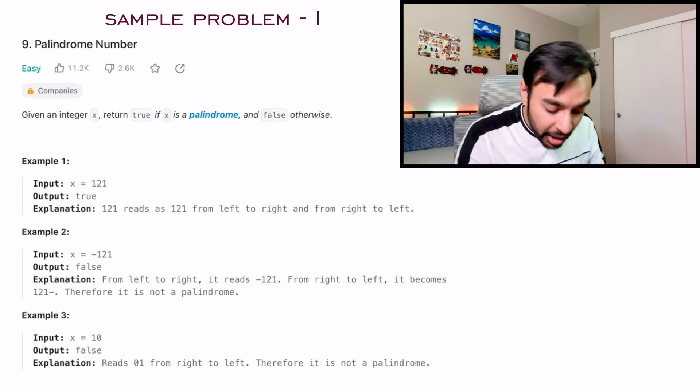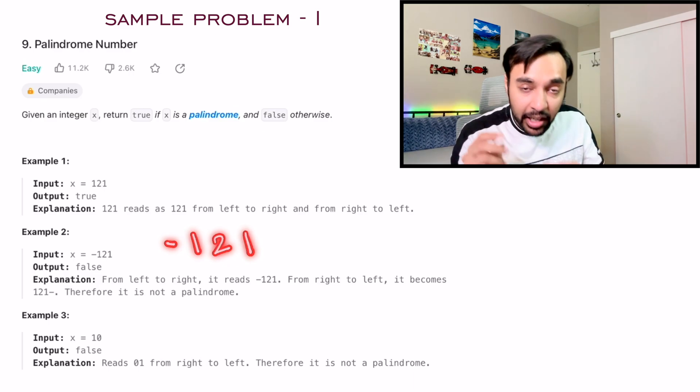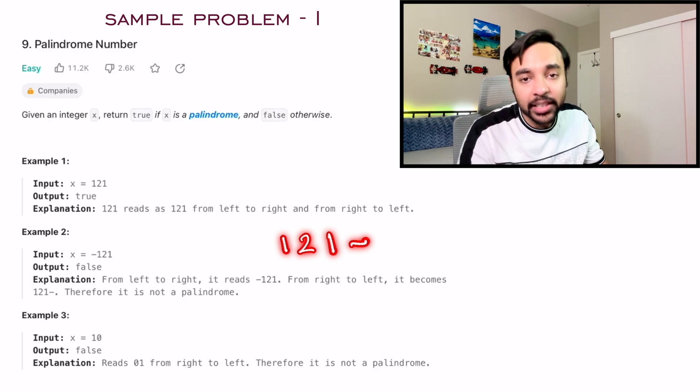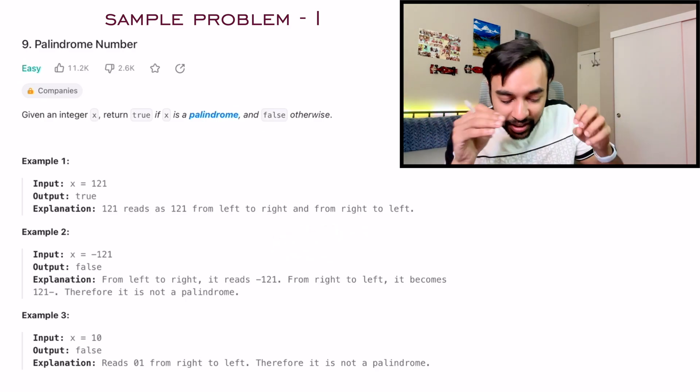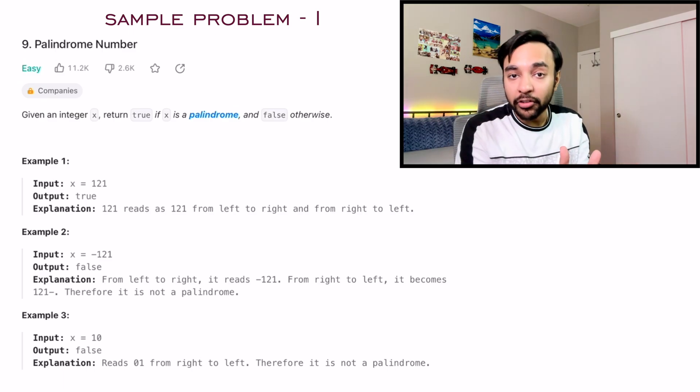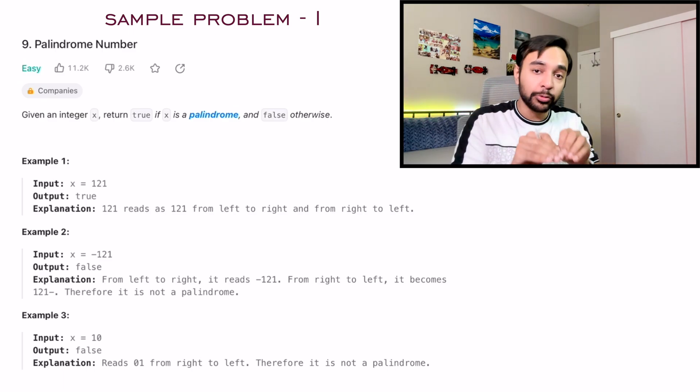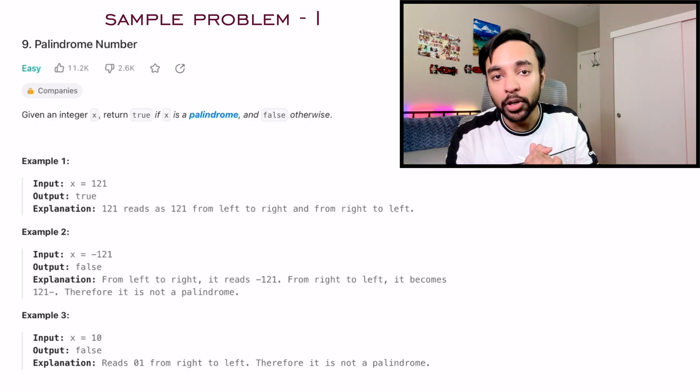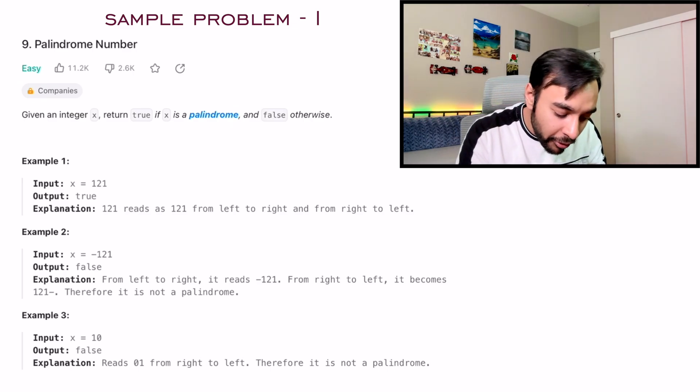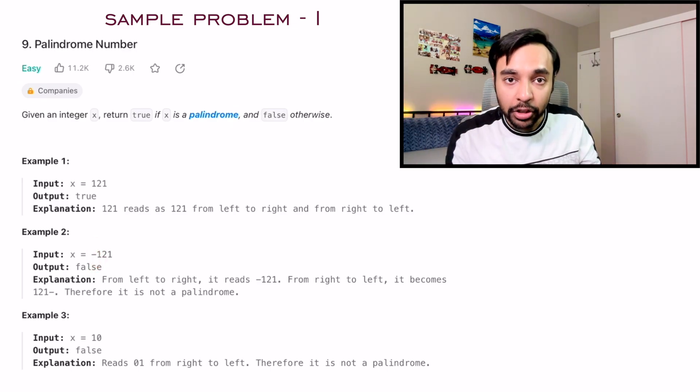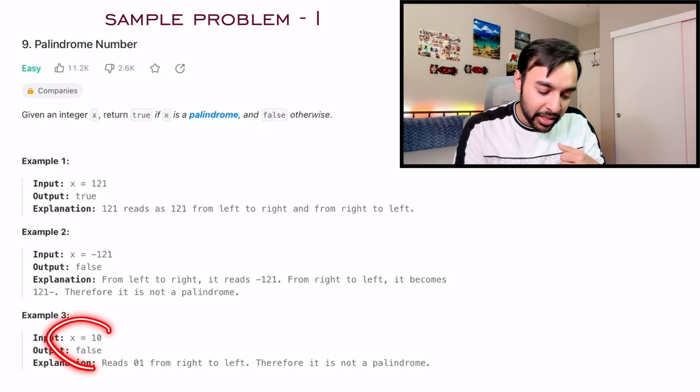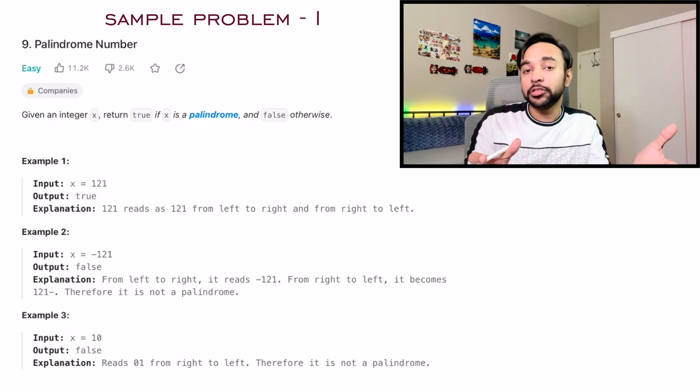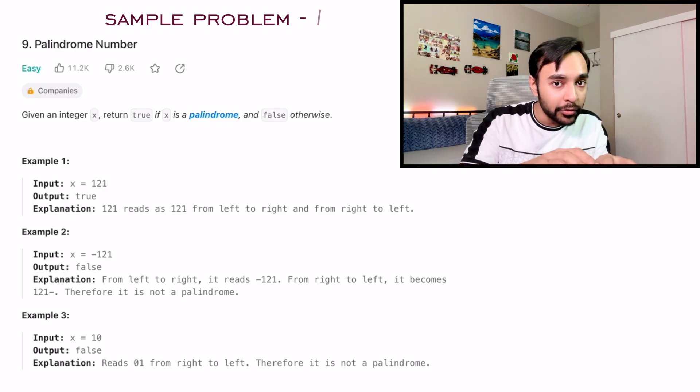Because if you read from the left, you get minus and then one and then two and then one. But if you read from the right, you will get 1, 2, 1 and then a minus. So they are not the same. But take care. For this problem, you have to return a false. But it could be possible that when you see this question in an interview, they ask you that, hey, forget the sign. You just have to tell me if the number is palindrome or not. In that case, you will first remove this minus symbol and then proceed ahead with your solution. The third example is once again very basic. The number is 10. If you read it from the left, if you read it from the right, they are different. So once again, return a false. So this is one example that involves numbers.